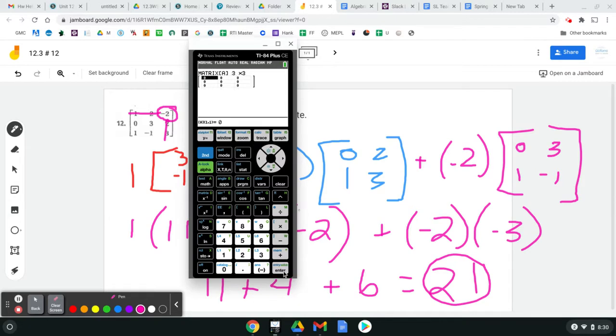here we go, one, which way are we going, two, negative two, zero, three, oops, zero, three, two, one, negative one, three, let me check to make sure I got it typed in right.